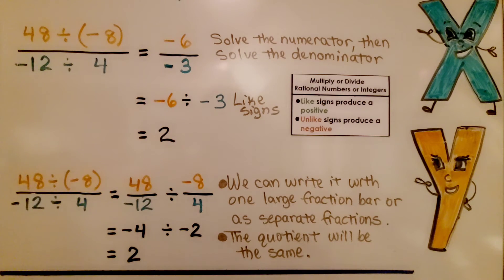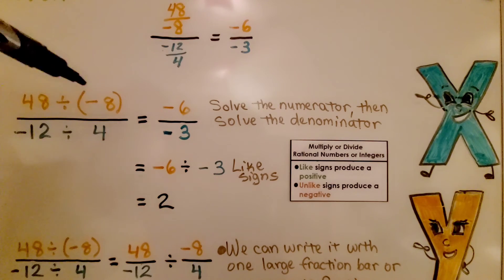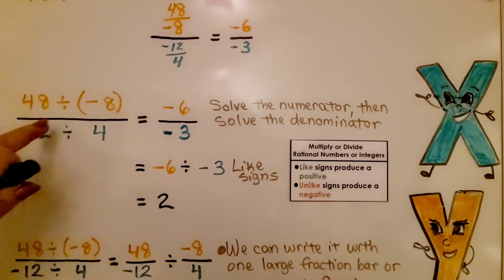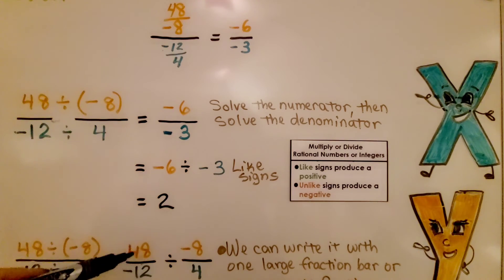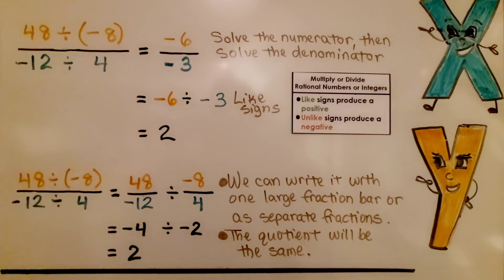If that was confusing, go back to the earlier example and keep in mind that this fraction bar means divided by. So we have 48 divided by negative 8 for the numerator and negative 12 divided by 4 for the denominator. But we can split this apart and just have one division symbol and do it separately — we'll get the same answer. Either way, we're going to get a positive 2; the quotient will be the same.